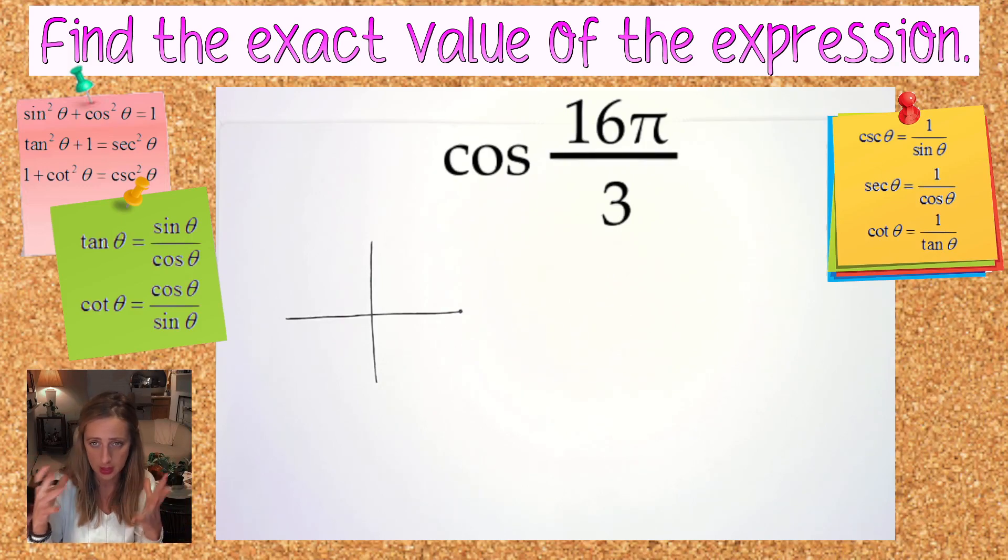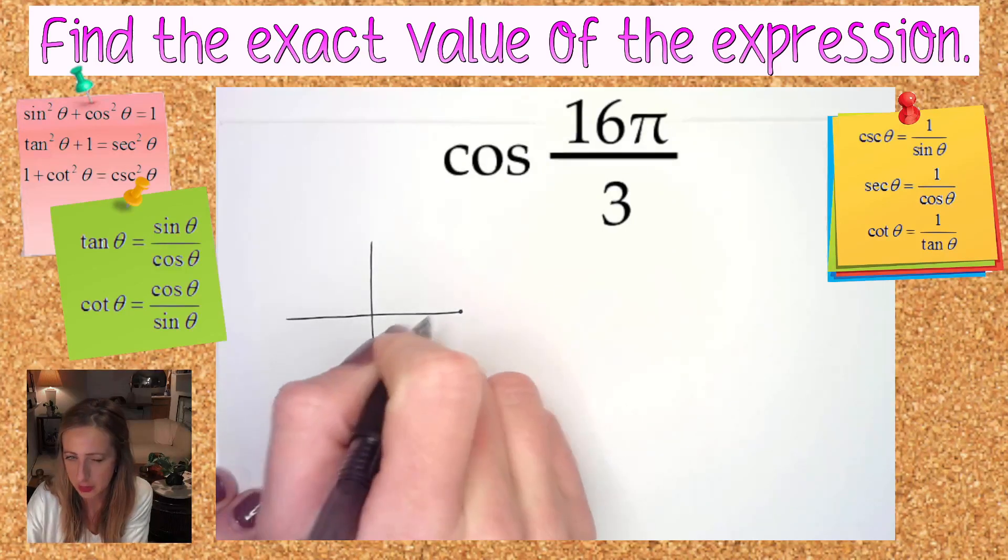Commonly people like to answer like, what's the sine of this, cosine of that? People are like 16π over 3, 5π over 3. No, no, those are angles. That's not the sine, it's not the cosine, it's not an x or y coordinate.